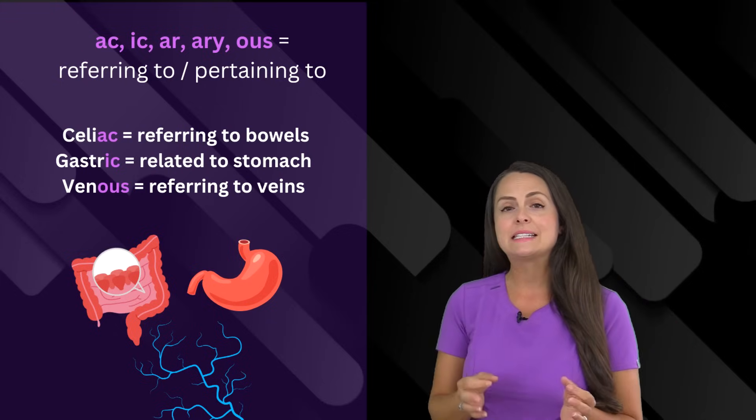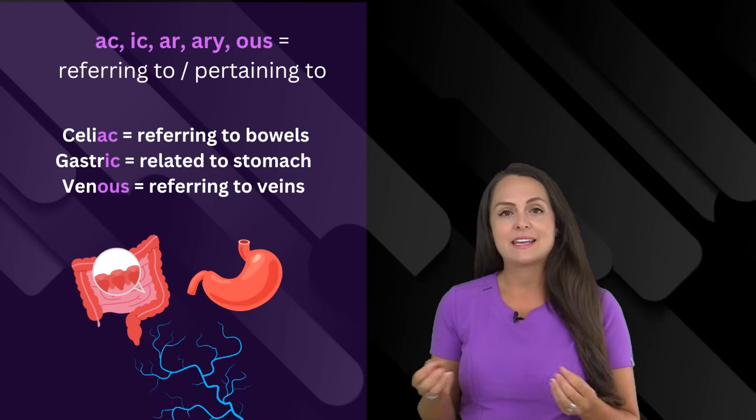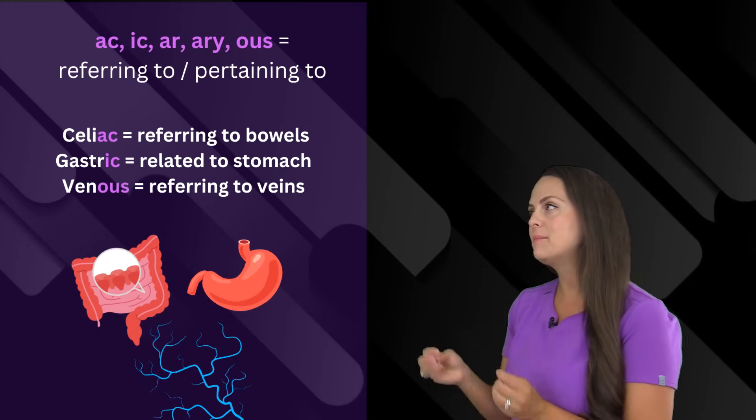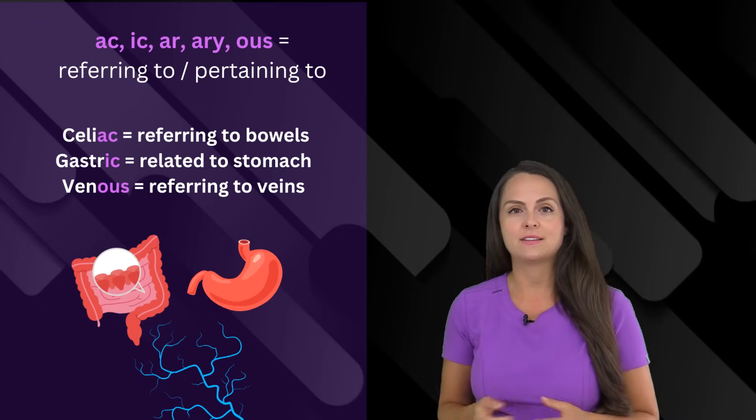Therefore, whenever I say celiac, I'm talking about a condition that pertains to the bowels. Or if I say gastric, I'm talking about something referring to the stomach. Or if I say venous, I'm referring to the veins.